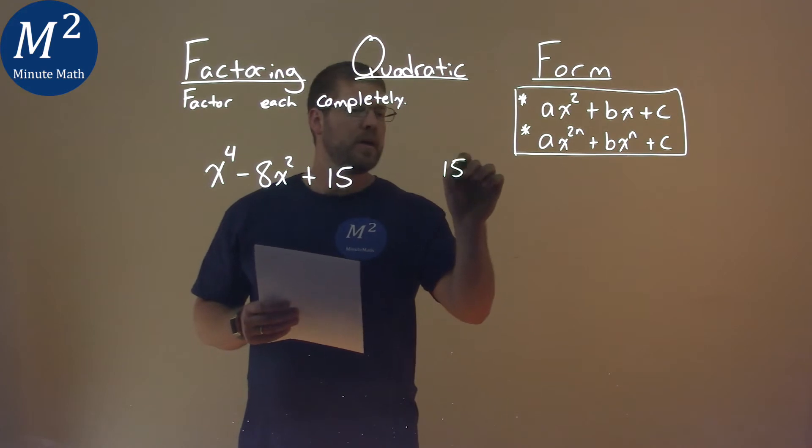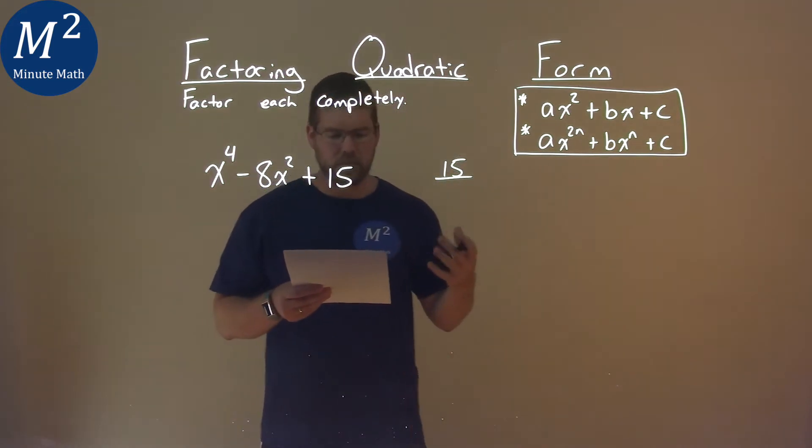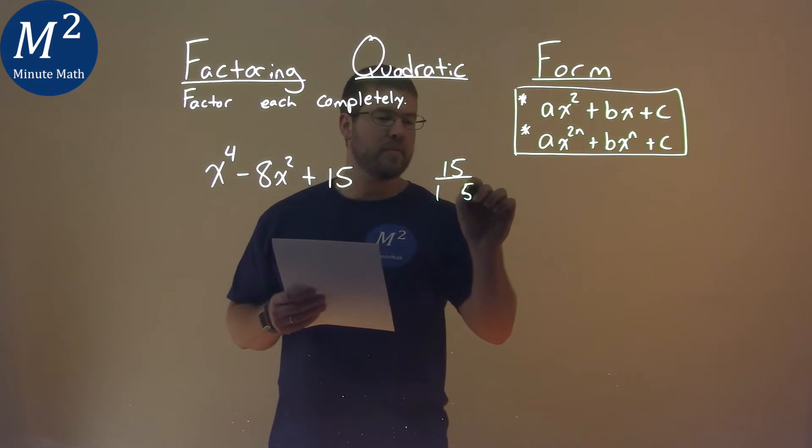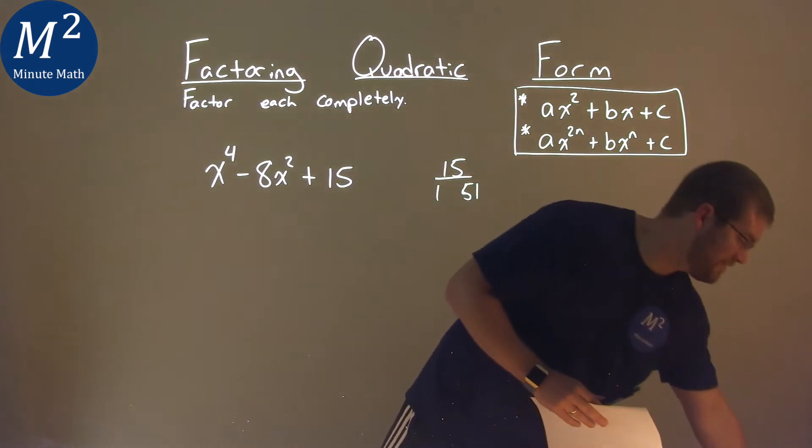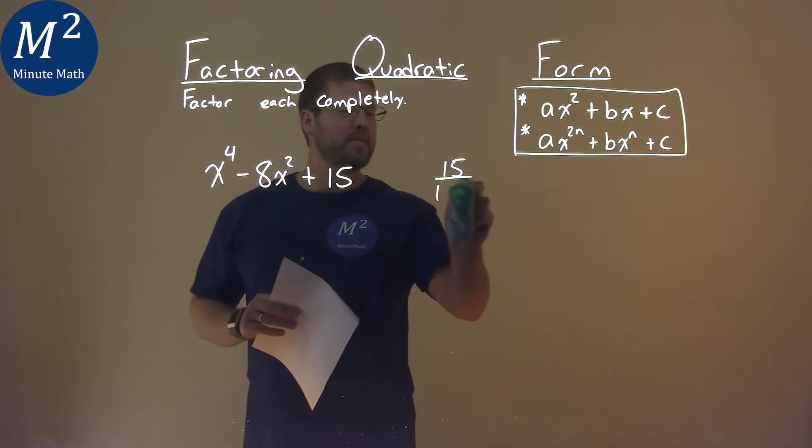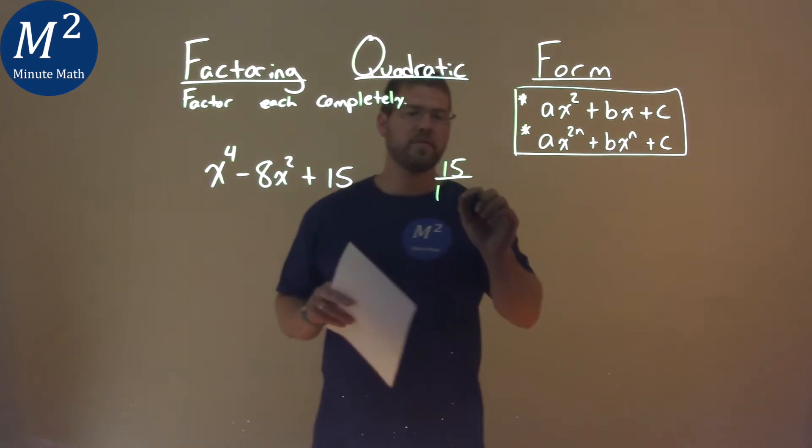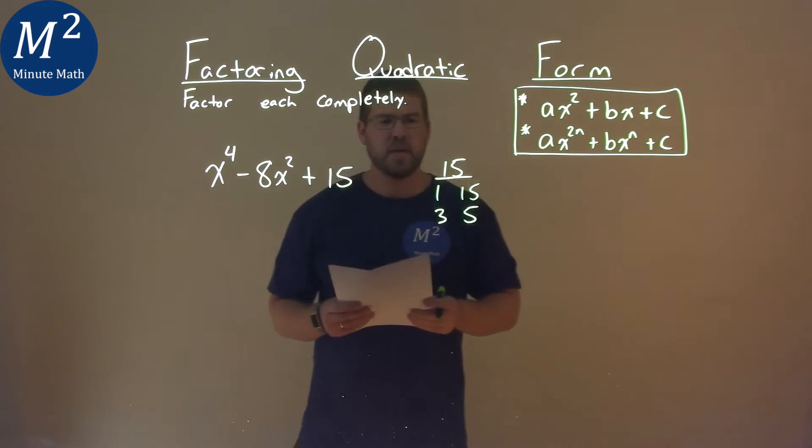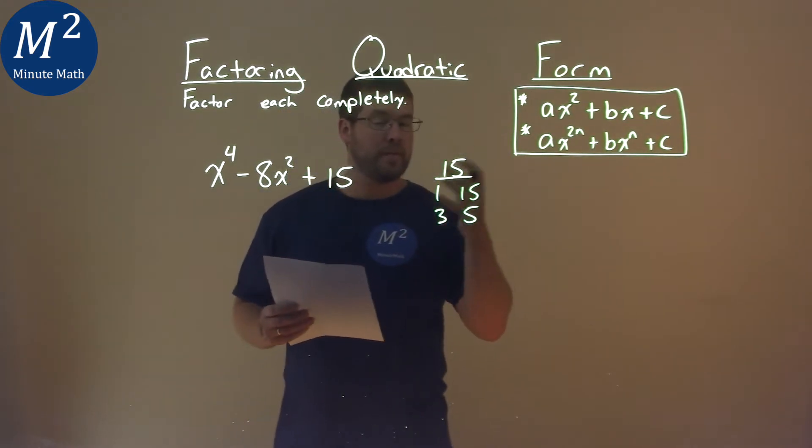We take our c value, it's 15, and we find the pairs of numbers that multiply to be 15. That's 1 and 15, and 3 and 5. So 1 and 15 and 3 and 5 multiply to 15.